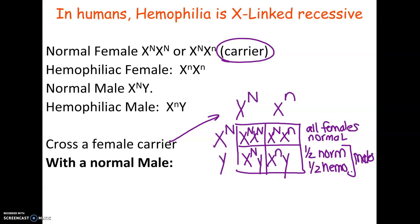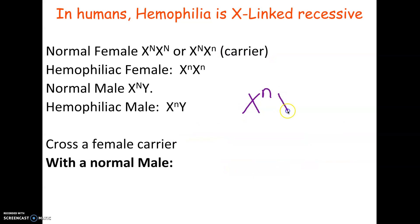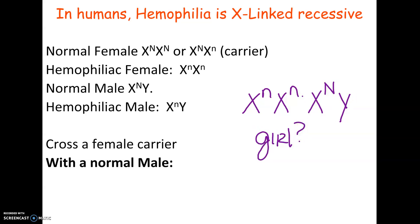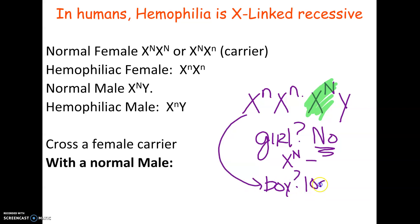If a female who has hemophilia crosses with a normal male, can she have a girl with hemophilia? No — every girl gets an X from her dad, and he gives X^N, so every daughter gets a copy of the good gene. Her daughters will all be carriers but none will have hemophilia. However, 100% of her sons will have hemophilia because the dad gives the Y, so the only X the boys get is from their mom, who has hemophilia.